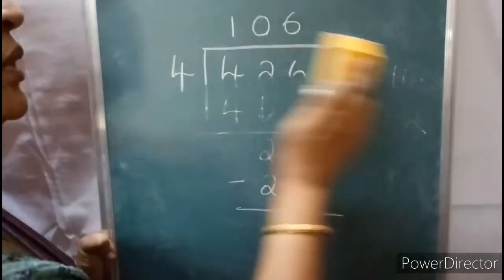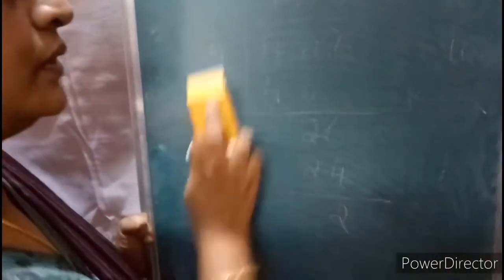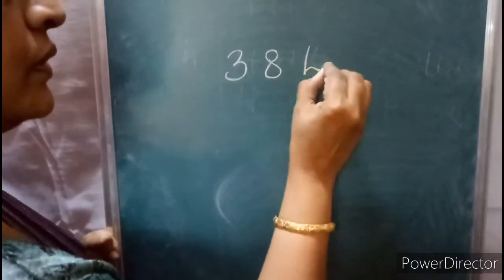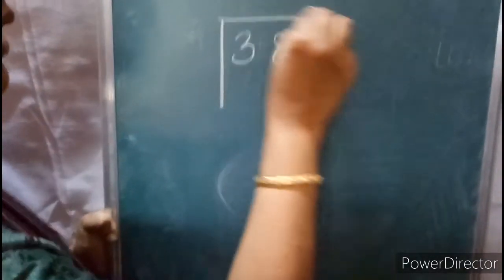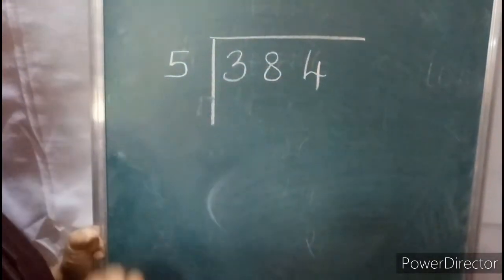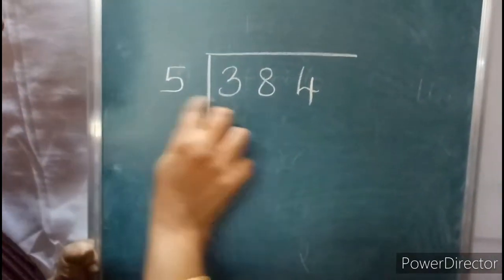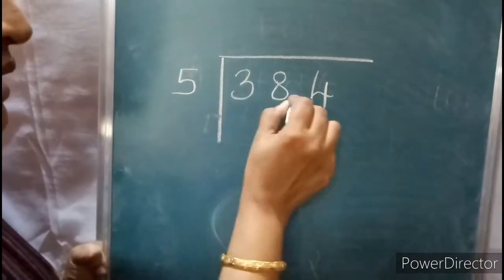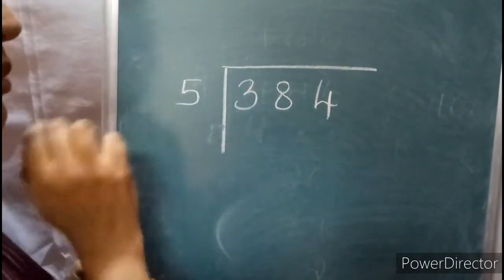Now one more number. 384 divided by 5. 3 is less than 5, so take 38 together, the first 2 digits.